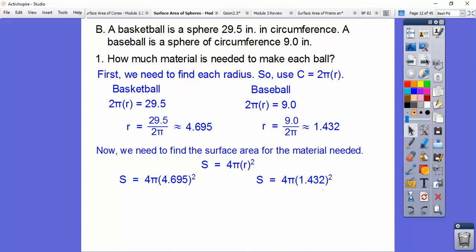Remember, order of operations, you have to do exponents first. Then times 4, then times 3.14. So there's the approximate surface area of the basketball and of the baseball. Let's answer that second question now.